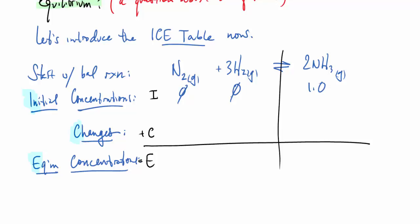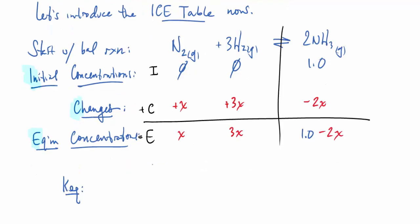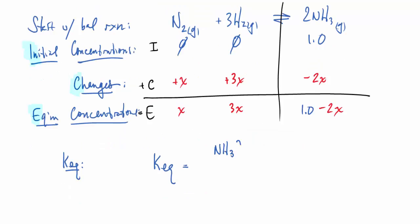We don't know what the system will do, but we know it's going to gain some nitrogen, gain three times as much hydrogen, and lose twice as much ammonia. And here in the equilibrium line at the bottom, we'll just add the initial plus the changes.